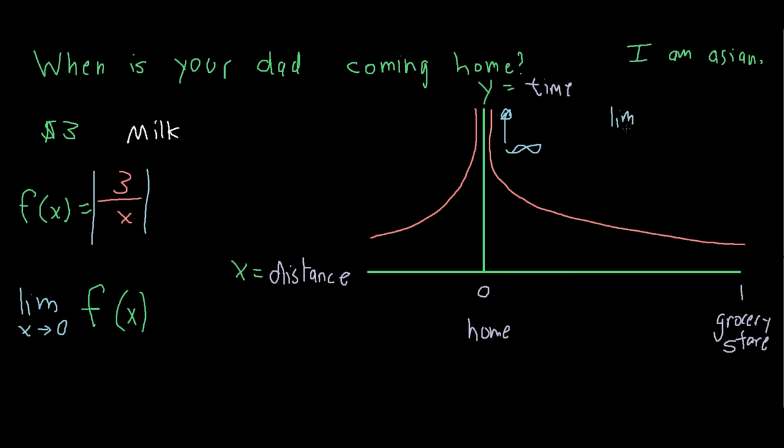The limit as x approaches 0, in respect to the equation of the absolute value of 3 over x, is infinity.